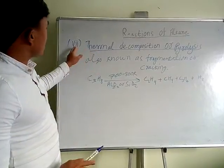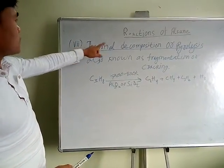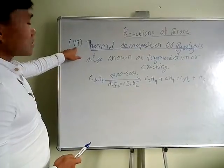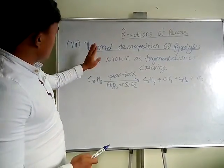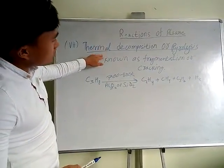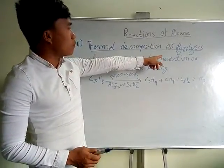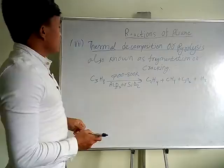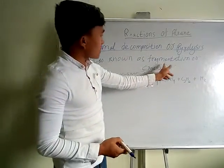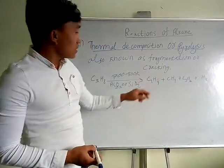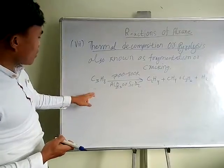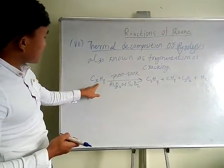Okay, this is the last one of the reactions of alkane. This is number seven. This is thermal decomposition or pyrolysis, also known as fragmentation or cracking.